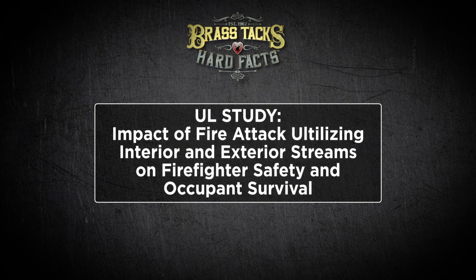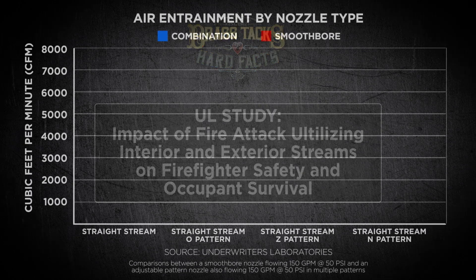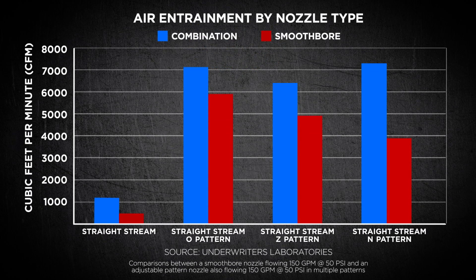Consider the following data recently published by Underwriters Laboratories. The title of the research is 'The Impact of Fire Attack Utilizing Interior and Exterior Streams on Firefighter Safety and Occupant Survival.' As this bar graph shows, the air movement caused by one type of nozzle held stationary and then the same nozzle moved in a typical fire ground fashion shows vastly different amounts of air movement. It shows that our commonly used nozzles and fire attack techniques move considerable amounts of air inside the fire compartment.